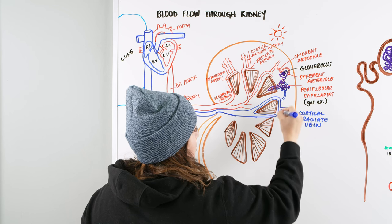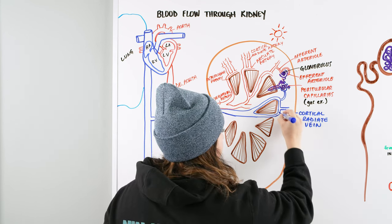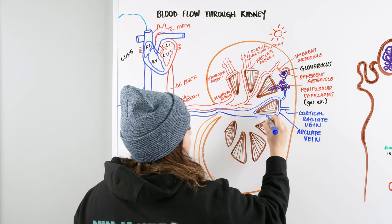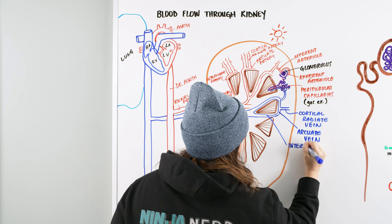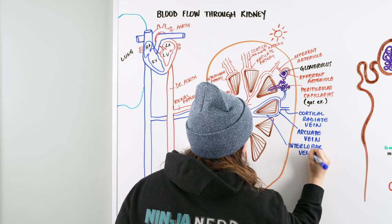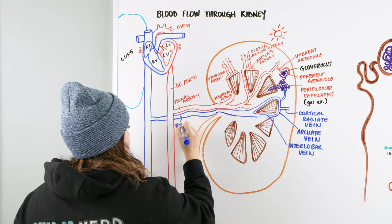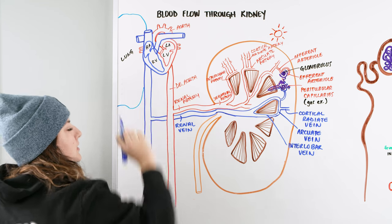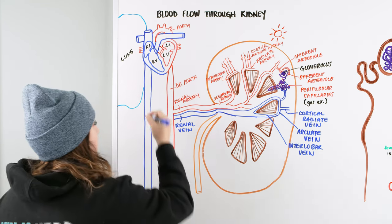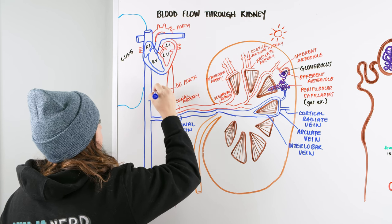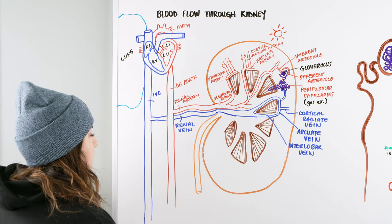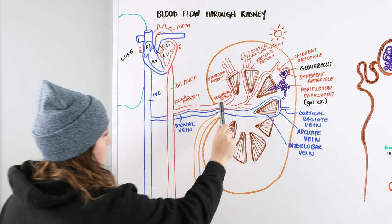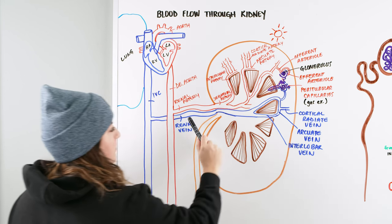From the cortical radiate vein, we have the arching vessel — our arcuate vein. It goes down in between the lobes into our interlobar vein, then flows out through our renal vein, and into the inferior vena cava, or IVC, which leads back up to the right atrium to start the cycle again. Note: there is no segmental vein — it goes straight from interlobar back into the renal vein.